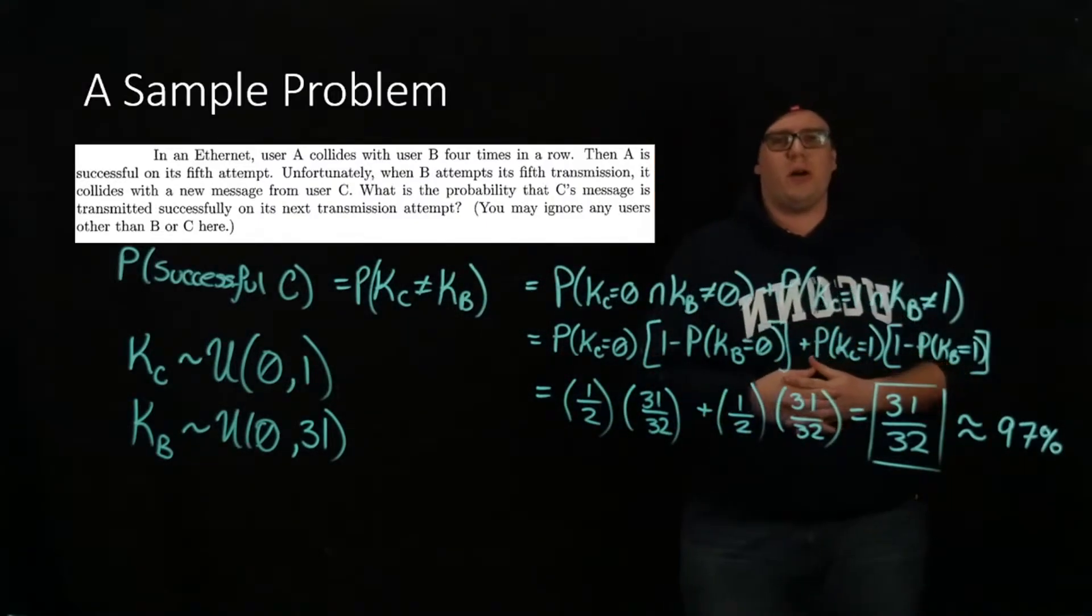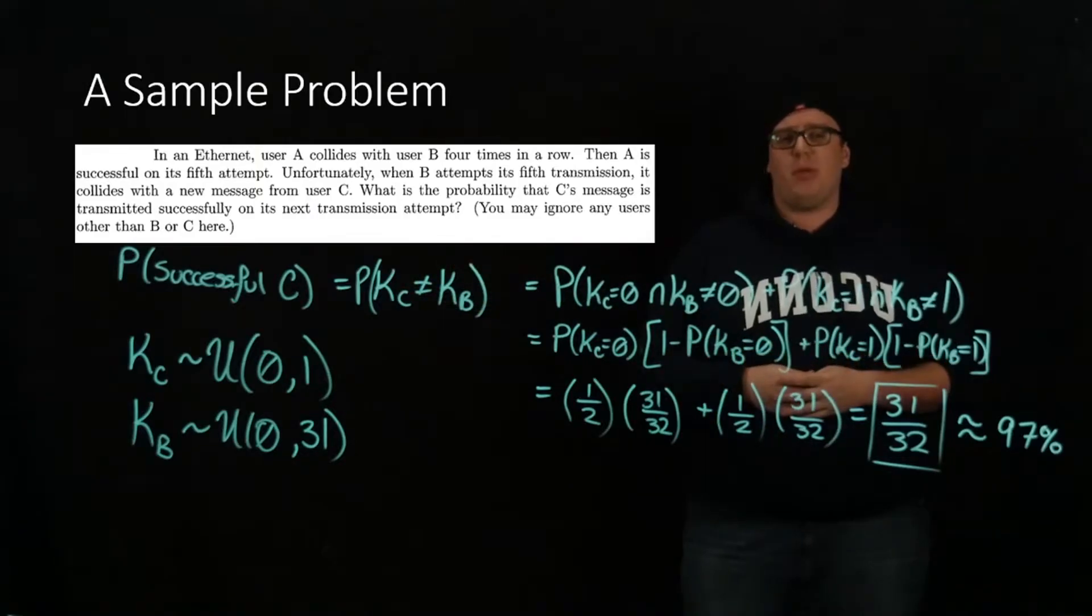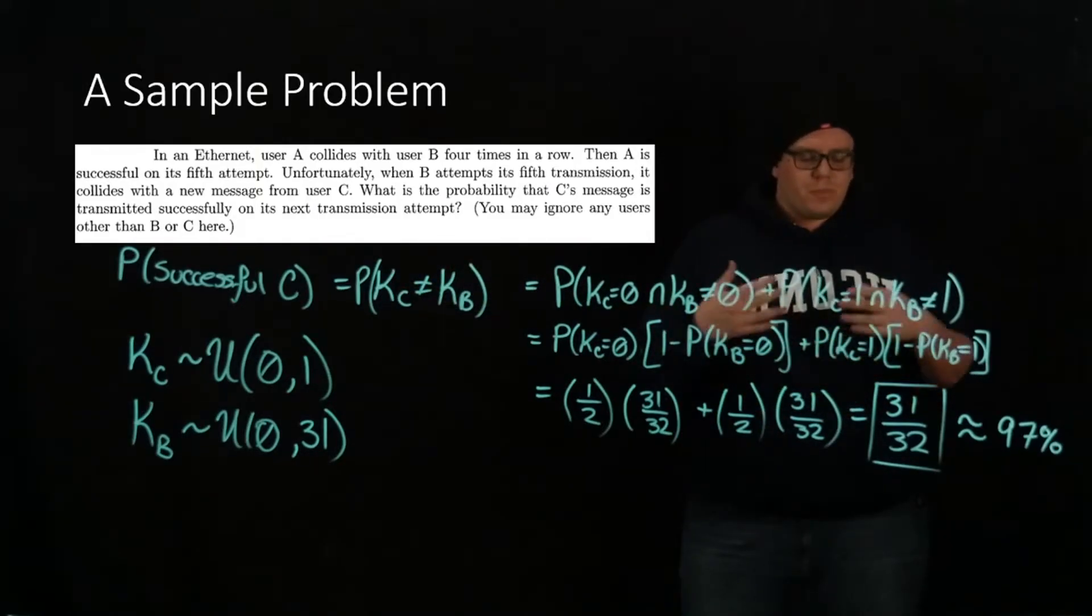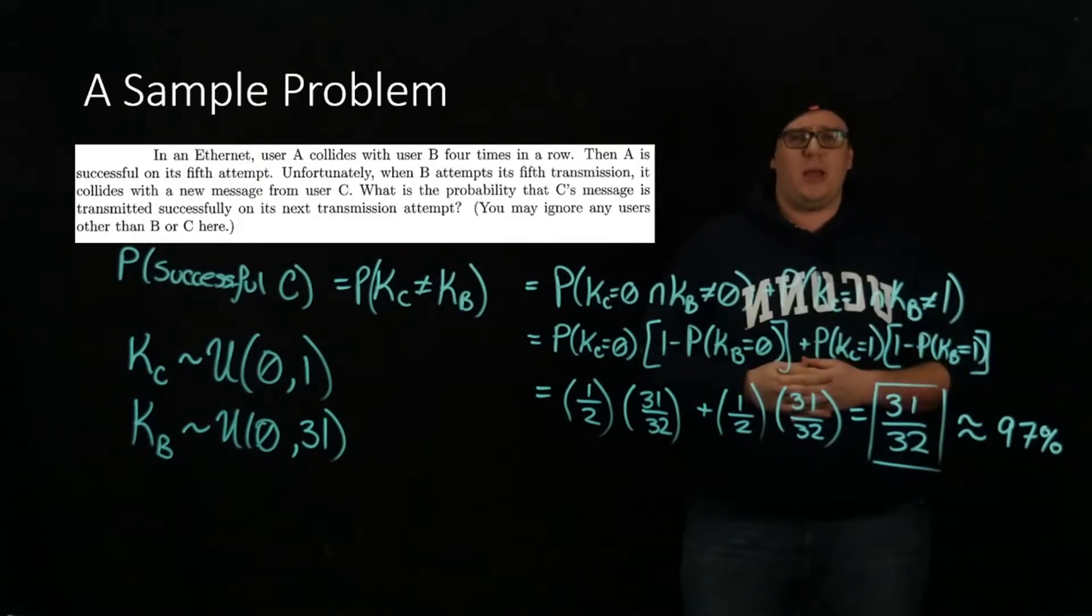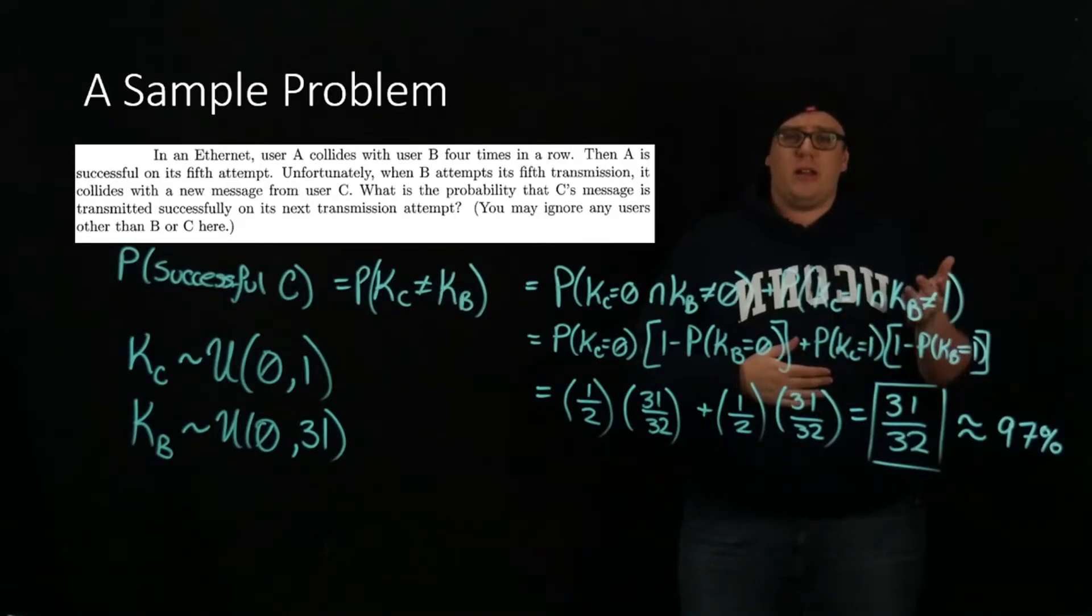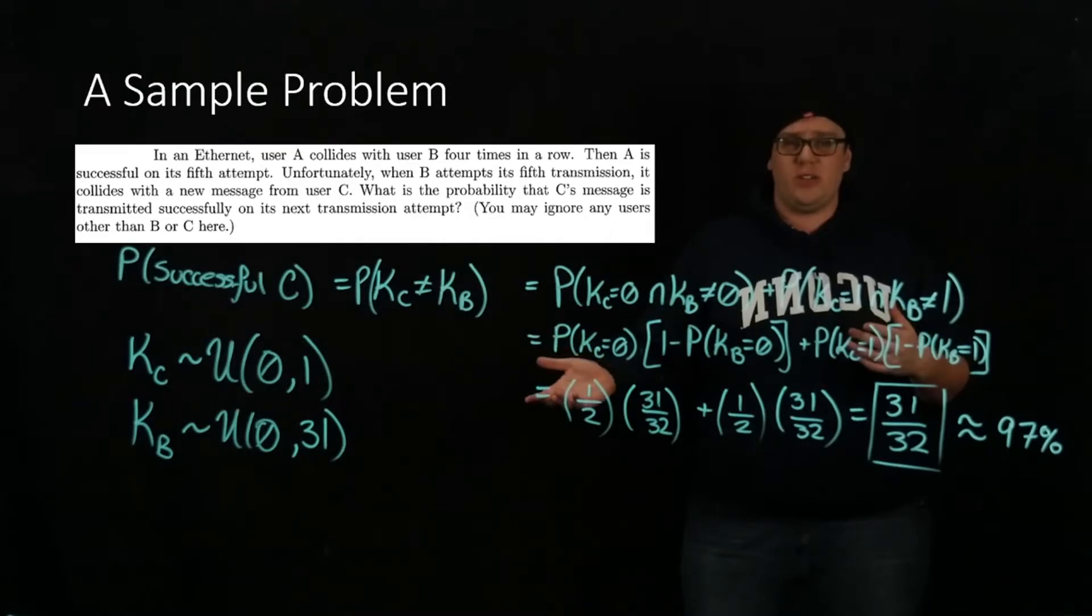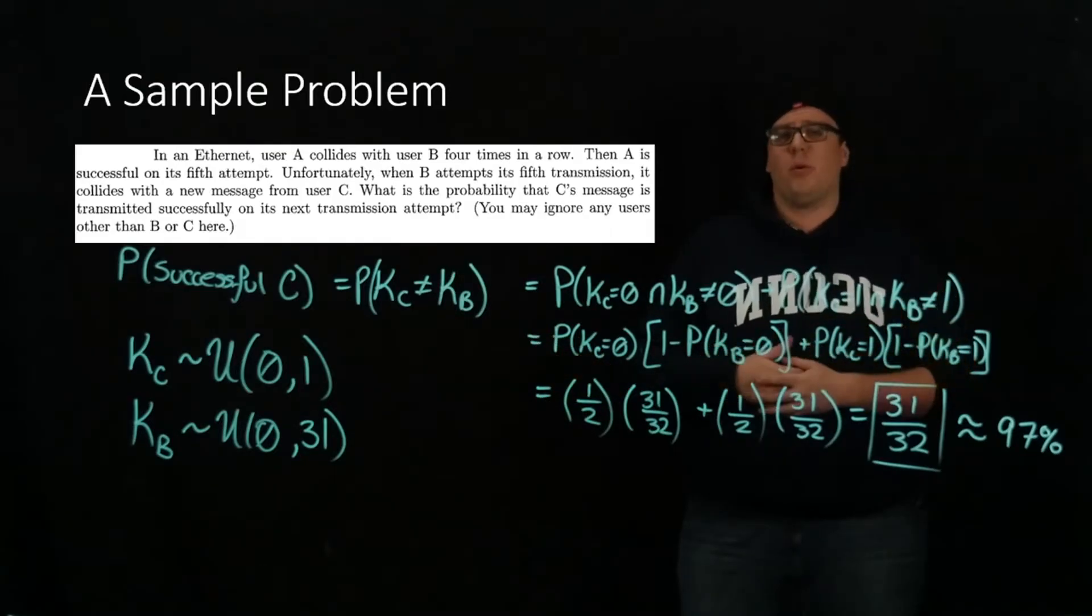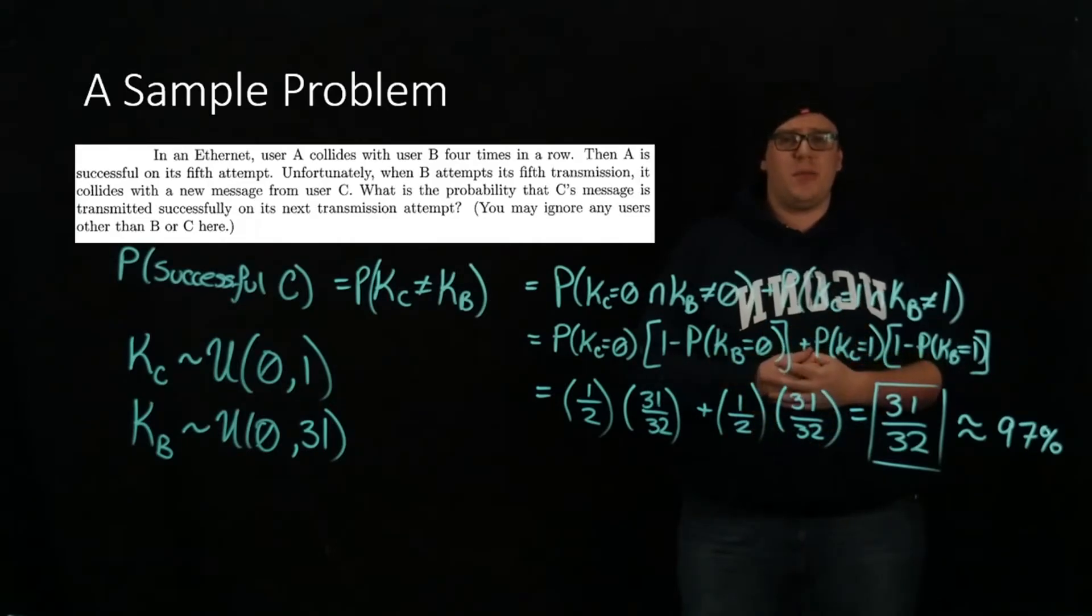We described the Ethernet protocol and then we said what was the efficiency of it and what were some problems with it. And then we looked at an example of three users trying to use the same channel according to this Ethernet protocol. We saw that B can have some priority problems where C, even though it's the first time it's trying to transmit and it's crashed once and B has crashed five times, C is more than likely going to be able to transmit. I hope you guys learned something and have a nice day.